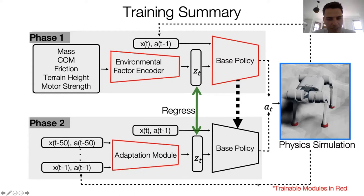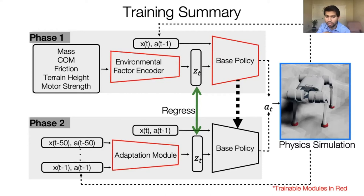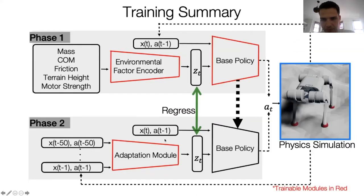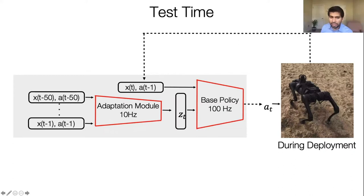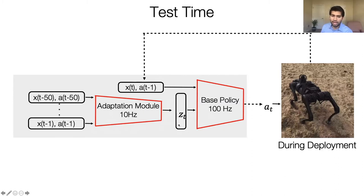How is the adaptation module fast enough online? You are not updating the weights online. Both the base policy and encoder are trained in simulation via reinforcement learning, and the adaptation module is trained in simulation via supervised learning. At deployment, you put them together. The adaptation module continuously infers Z at very high frequency, and since Z is the conditioning of the base policy, the base policy adapts because Z is being updated online rapidly. This is what I call rapid adaptation.